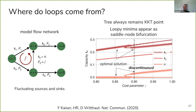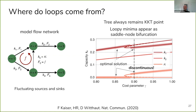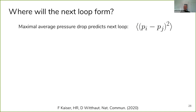We can also learn something about bigger networks. There's a predictor for where the first loop appears as you move through parameter space: you can predict the position where the next loop will appear by the average pressure drop between the nodes of the edge where the loop appears. This works surprisingly well — even for subsequent loops, not just the first one. Here's a bigger network: the pressure drop criterion extremely well predicts the order of appearance of loops. This is structurally similar to crack formation in desiccating mud, where stress is relieved by creating a crack. Here, stress in the network is relieved by creating a loop — a redundant interconnection.